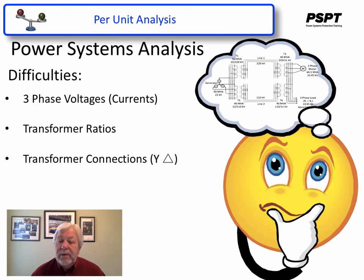The second difficulty with transformers is the fact that they have several configurations. They could be Y to delta, delta to Y, Y to Y, delta to delta, Y to zigzag, center tapped, with moving tap changers, and everything else in between.